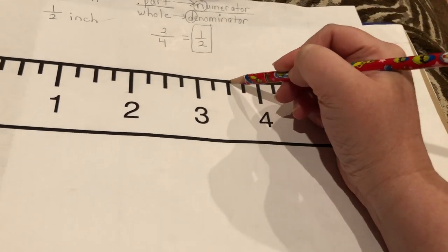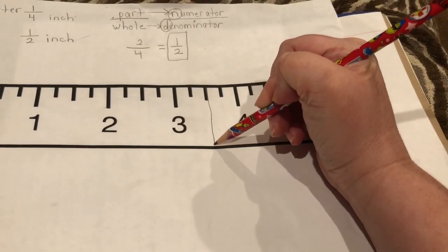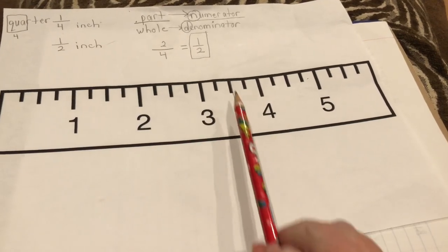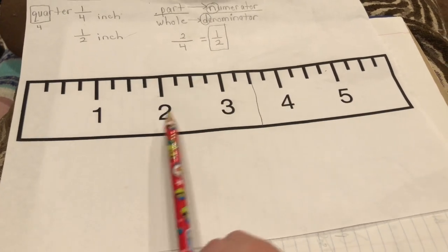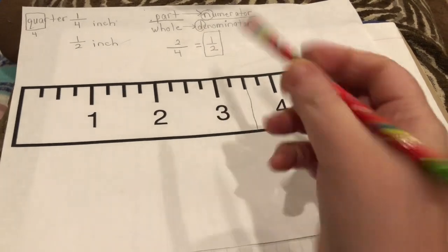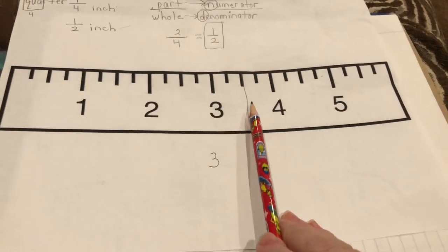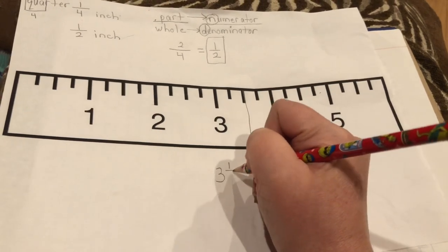So this longer hash mark right here cuts the inch in half. So if our line segment went to here, we would have one, two, three whole inches where we have the whole thing and then half of another inch. And so we would write it like this.